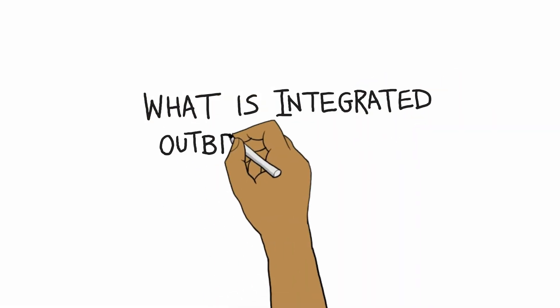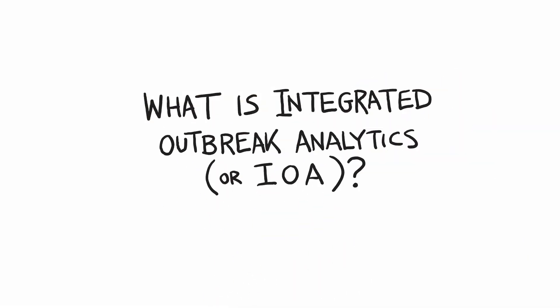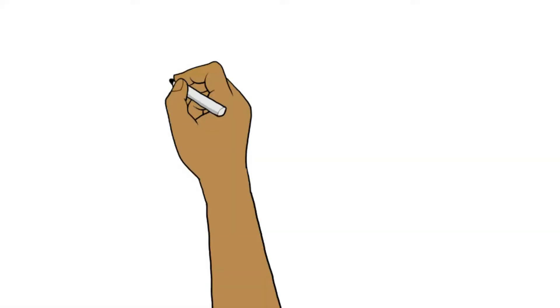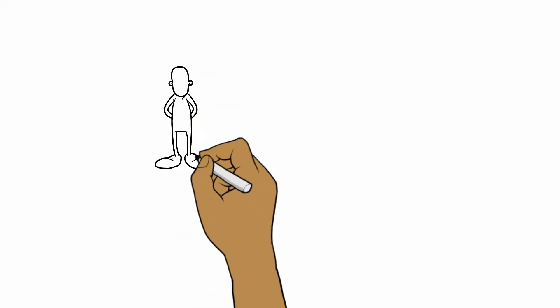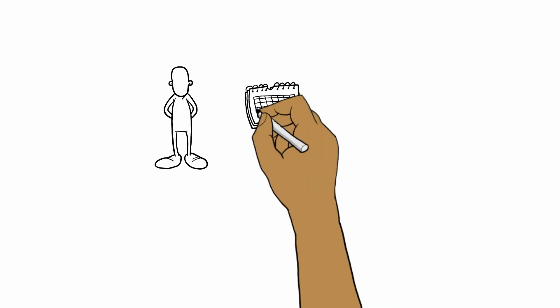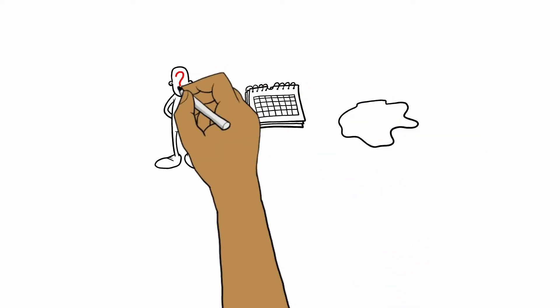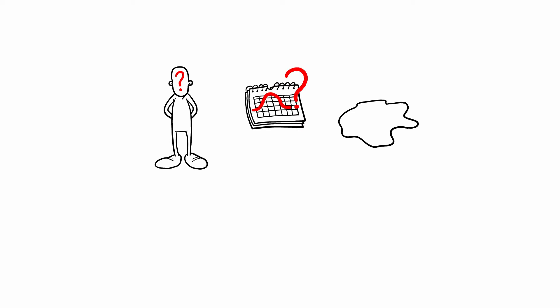What is Integrated Outbreak Analytics or IOA? When investigating a disease outbreak, the first information that we look for in classic epidemiology is person, time, place. That is who is affected, when it is occurring and how quickly it is spreading and where it is spreading.